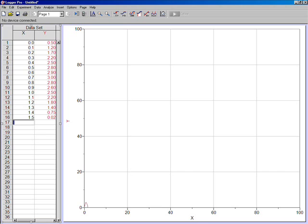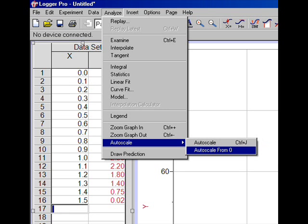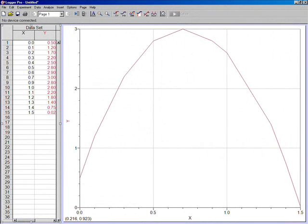To make the graph as large as possible, while still making the origin visible, we will use the autoscale function. Go to the Analyze menu and choose Autoscale from 0. Notice the data points are properly scaled to fill the entire screen, while still allowing the origin to be seen.